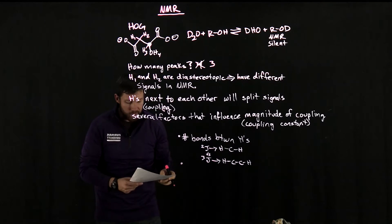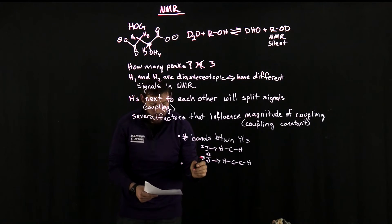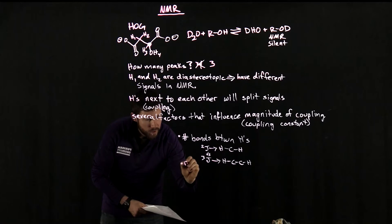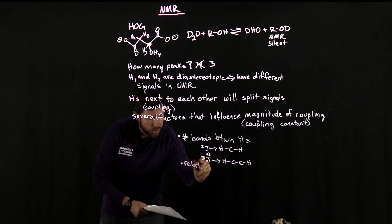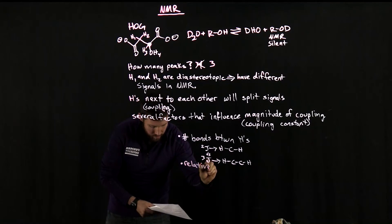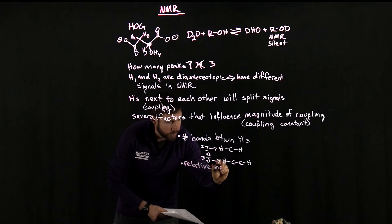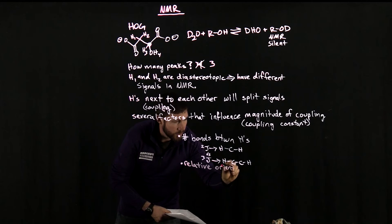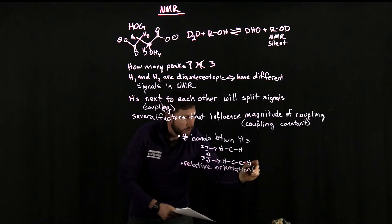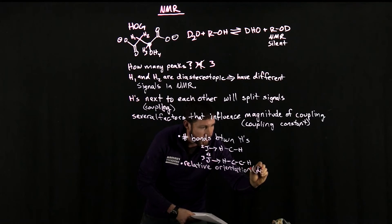And another factor that can influence the magnitude of coupling constants is the relative orientation, and this can also be referred to as the dihedral angle.